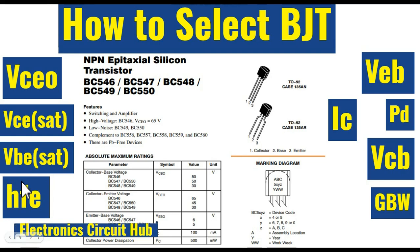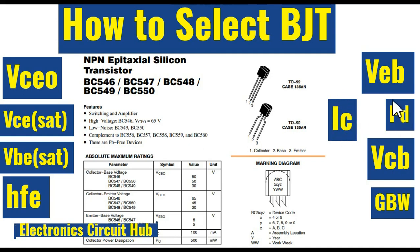HFE is one more important parameter you need to look at. Another important thing is DC collector current, IC. Let us say you are driving your LED with 20 milliamps current — for this transistor your IC is 100 milliampere, so you also need to look into it. And you have to calculate the power dissipation: PD equals VCE multiplied by IC, so you need to consider this.